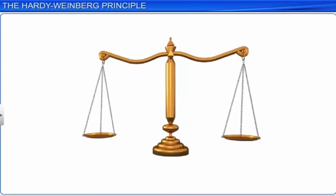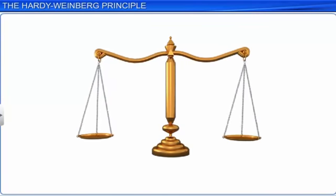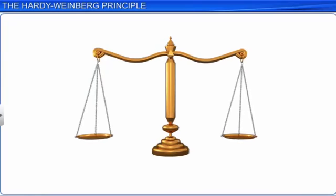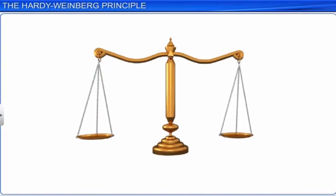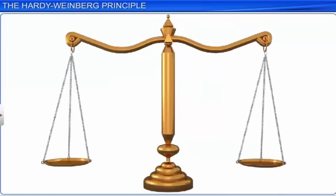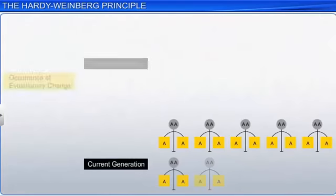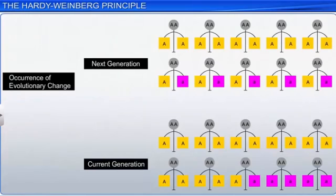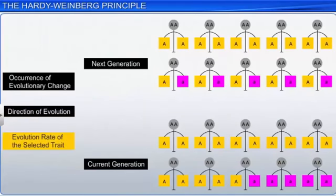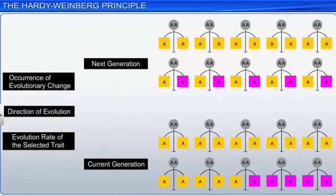When the frequency measured differs from expected values, the difference or the direction indicates the extent of evolutionary change in a population. For example, generally the frequency of p or q is 0.5. If it changes to either less than or more than 0.5, it would indicate evolutionary change. We can learn about the occurrence of evolutionary change, the direction of evolution, and the evolution rate of the selected trait, by comparing the genotype frequencies of the next generation with those of the current generation.